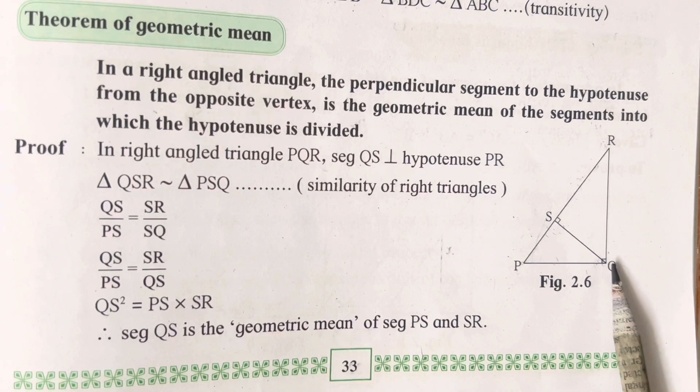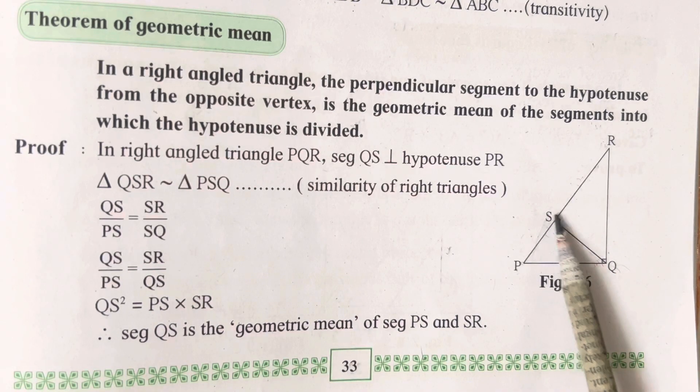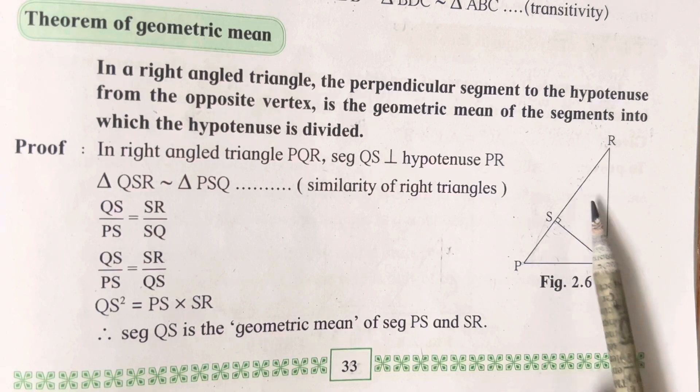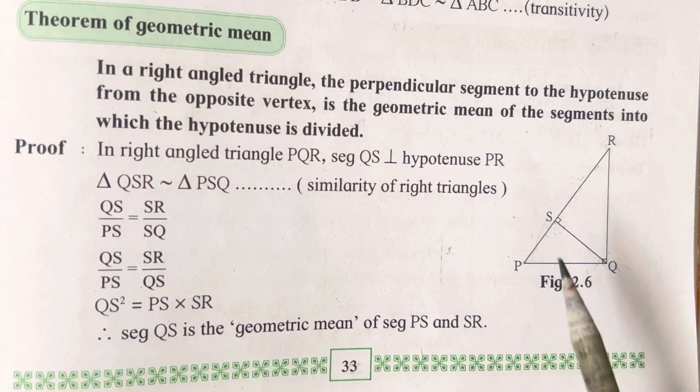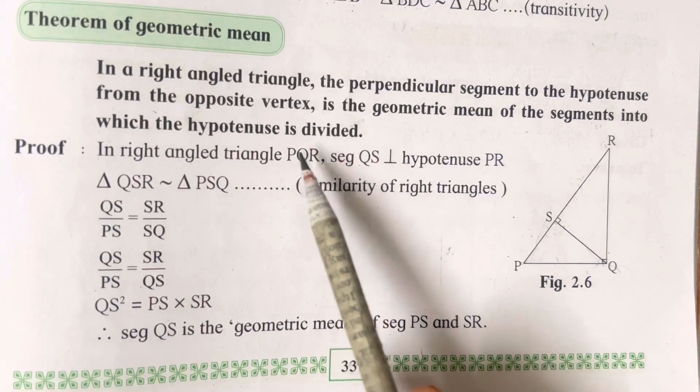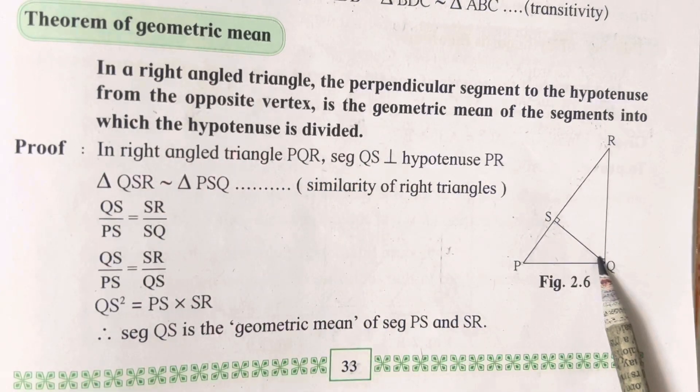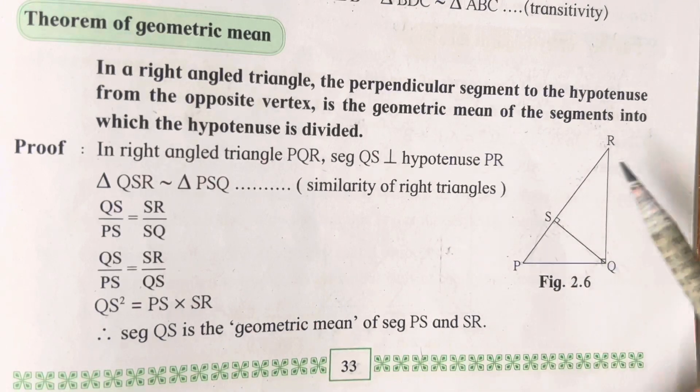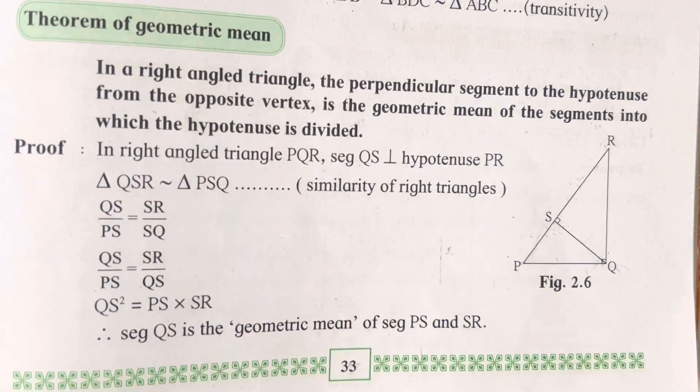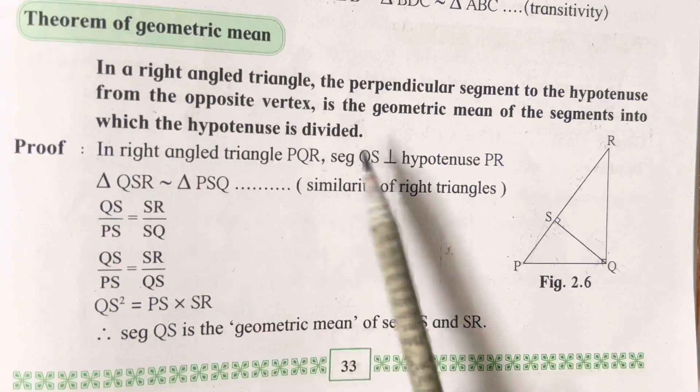You can name it RQP also, which is a 90-degree angle. When a perpendicular segment is drawn, it also forms a 90-degree angle. I think it is clear to everyone how you all have to read the diagram. Now in right-angled triangle PQR, segment QS is perpendicular to PR.